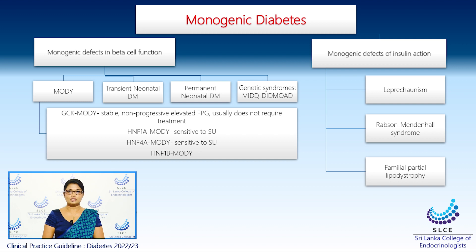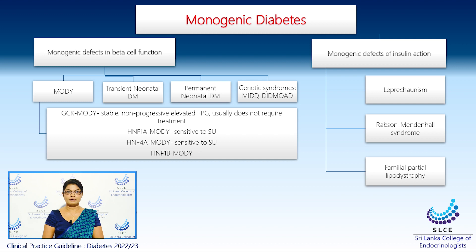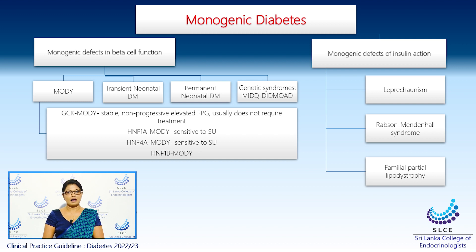Moving on to monogenic types of diabetes with regards to defects in insulin action, such as leprechaunism, Rabson-Mendenhall syndrome, and familial partial lipodystrophy. All of these are associated with insulin resistance and all are autosomal recessive, apart from familial partial lipodystrophy.